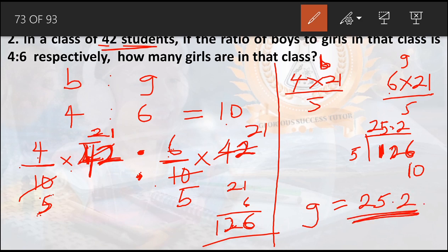This number is a bit unusual in mathematics. In reality there is no such thing as 25.2 girls, because we can only have whole numbers of people. This is just an illustration of how ratio calculations work — never get confused about it.